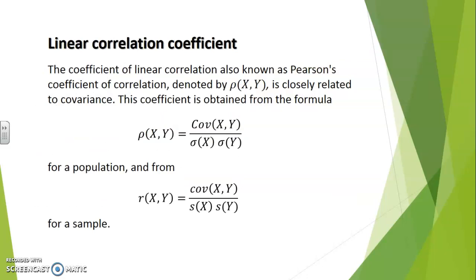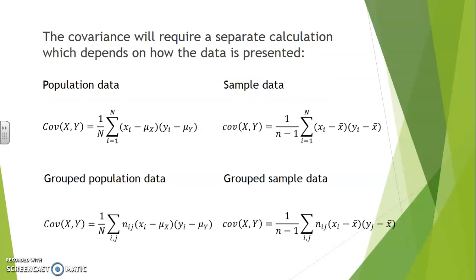The linear correlation coefficient is a more numerical way of establishing the intensity of the relationship between variables. The coefficient of linear correlation is also known as Pearson's coefficient of correlation, and is denoted by ρ(xy) for a population or r(xy) for samples. It is very closely related to covariance, which is also a measure of alignment. Below are presented the formulas for calculating correlation in the case of a population and of a sample, with the appropriate notation.